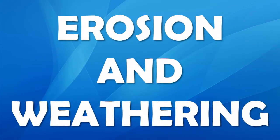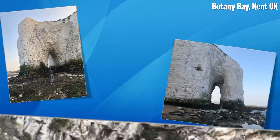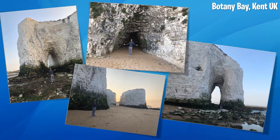Together, erosion and weathering create unique landforms. You can see some of these landforms in Botany Bay in Kent — landforms like arches, caves, stacks and stumps.